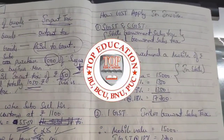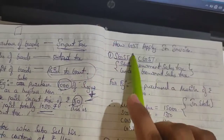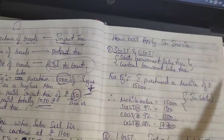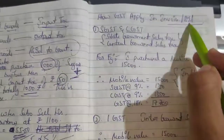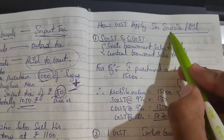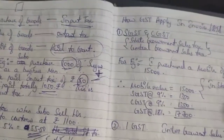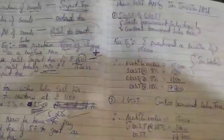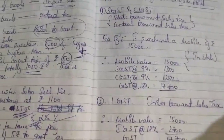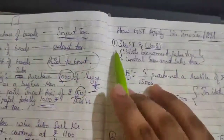Hello friends, welcome to Top Education. In this session, we are going to learn how GST is applied on an invoice. In business, what we call a bill is actually called an invoice. An invoice may be for purchase or for sales. If we are selling goods, we have to give an invoice; if we are purchasing goods, we have to take an invoice.